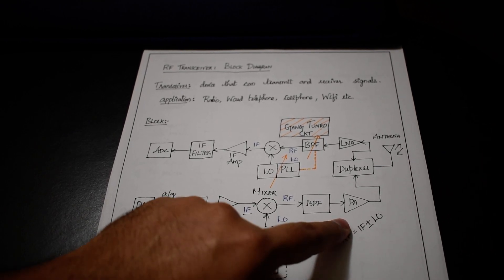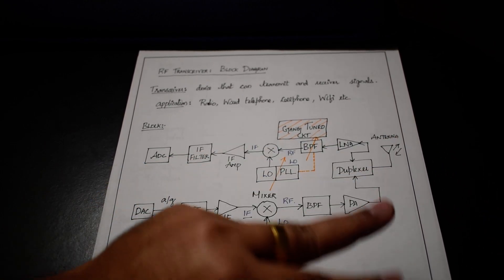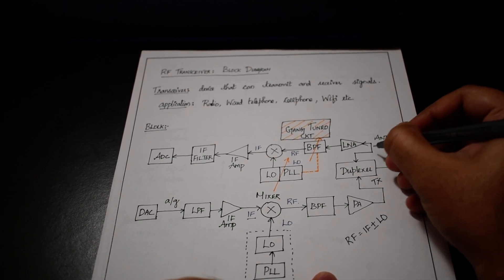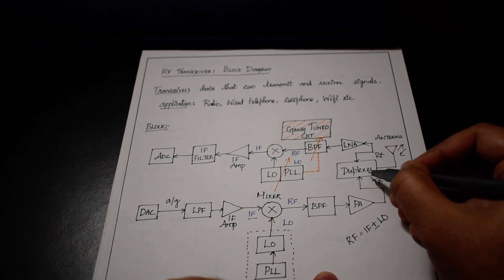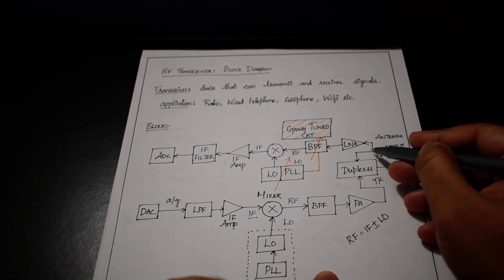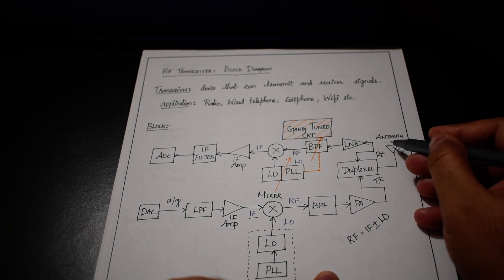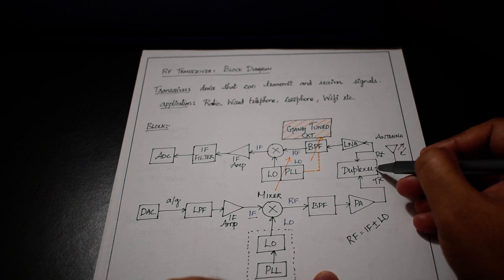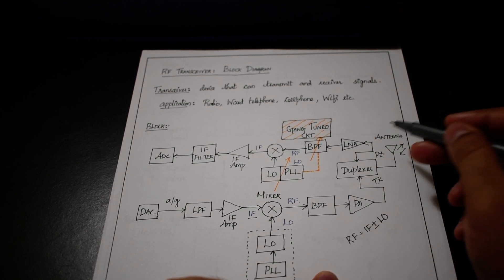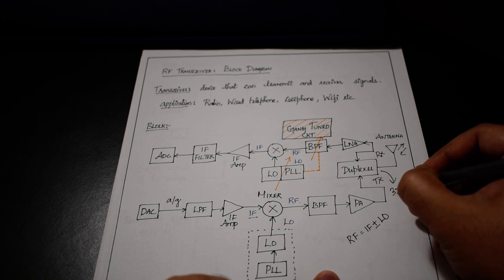We give the boosted signal to the duplexer. The purpose of the duplexer is to switch between two different modules — the TX block and the RX block. It switches the antenna between TX and RX: whenever we are transmitting, the duplexer throws the switch to TX, connecting the antenna to the transmitter; whenever we are receiving, the switch is thrown to the RX block. This shows that the duplexer is a three-port device.